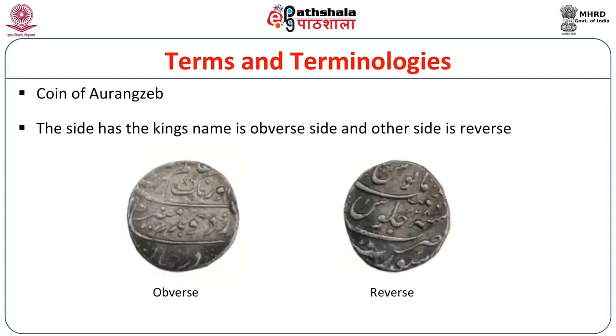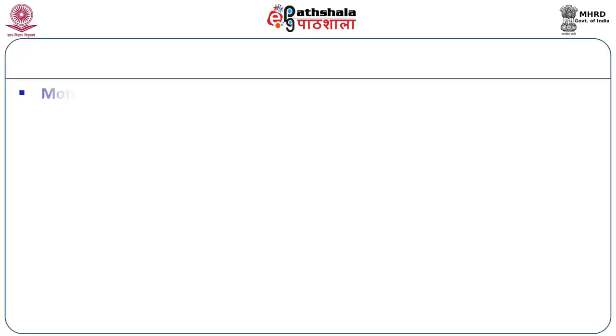On coins of Aurangzeb, the side with the king's name is the obverse and the other side is the reverse. Notably, Muslim coins — including Mughal coins — have no figures, whether of kings or deities; they carry only legend. This is an important feature. We have now seen what obverse and reverse are, and how they changed from period to period.